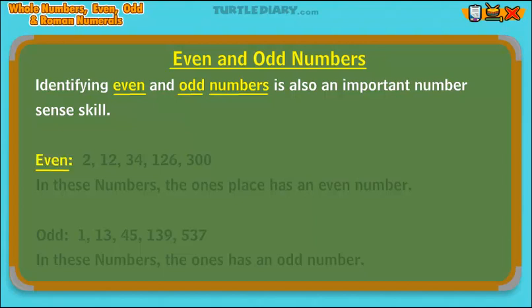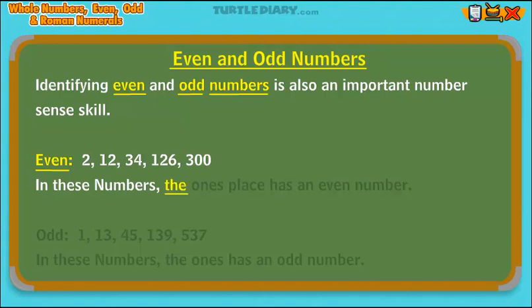Even numbers: 2, 12, 34, 126, 300. In these numbers, the ones place has an even number.